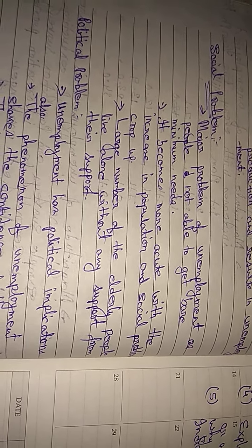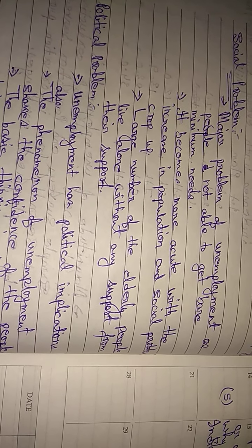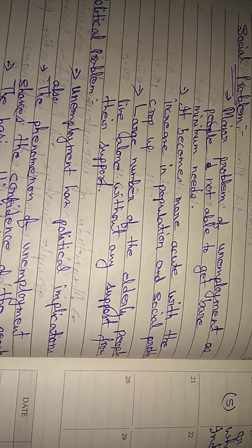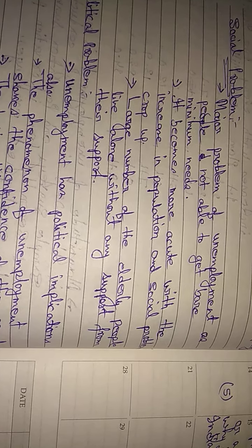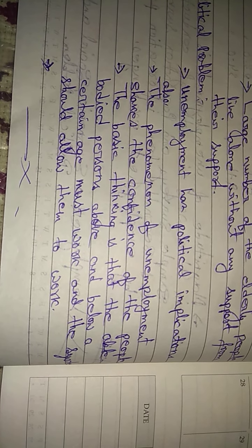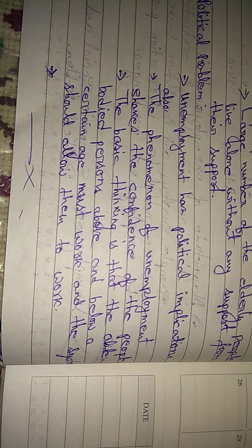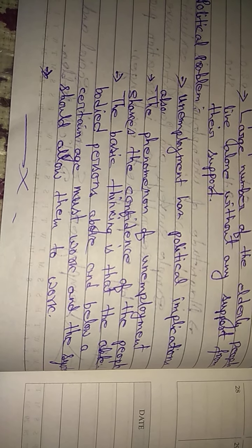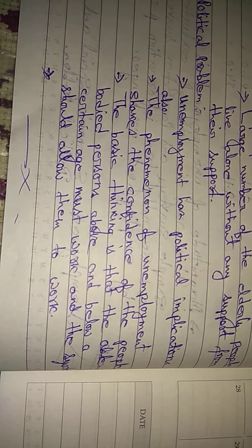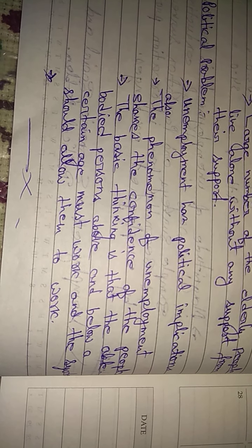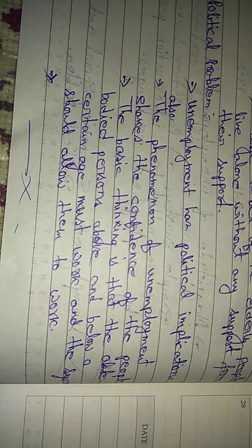Now let's see how unemployment is a political problem. Unemployment has political implications — meaning effects. People who are not employed are always anxious, and the phenomenon of unemployment shakes the confidence of the people. The basic thinking is that all able-bodied persons above and below a certain age must work and the system should allow them to work. A person who is just a consumer without being a producer will not be a responsible citizen.